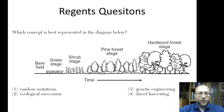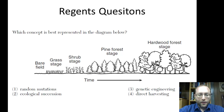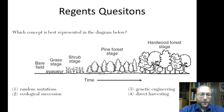Here are some Regents exam questions. In a typical question you would see on most exams, you're asked to identify that a process shown is succession. Random mutations is something from genetics; genetic engineering is also genetics — we'll get into those things in the spring. Direct harvesting we'll get into later in this unit. Basically, just identify this as succession — usually the other answer choices are from something completely different.